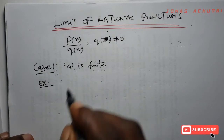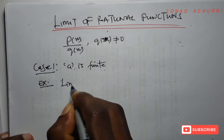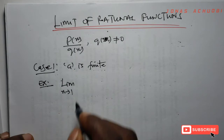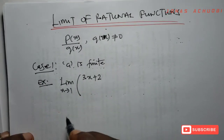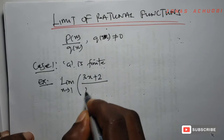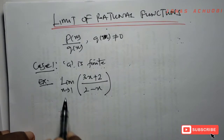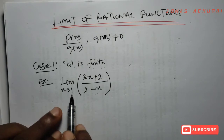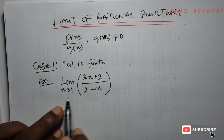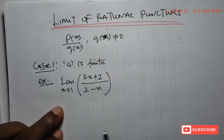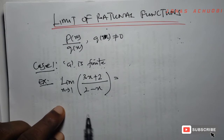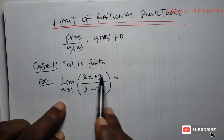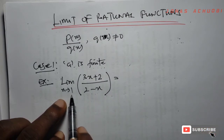We wish to evaluate the limit as x tends to 1 of the function (3x + 2) divided by (2 - x). Here our a is 1, which is finite. The first thing we want to check is: is this function defined at the point x = 1?